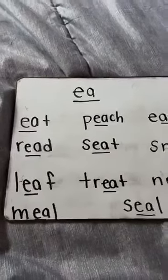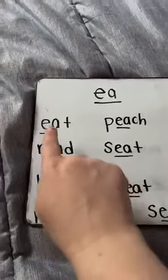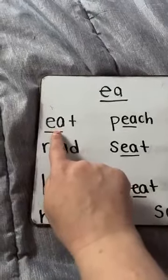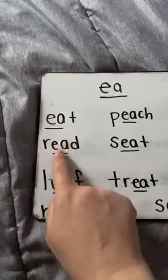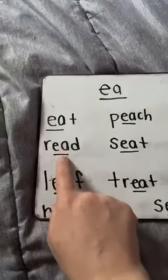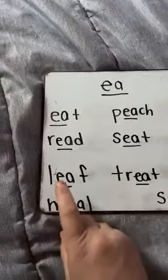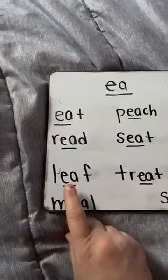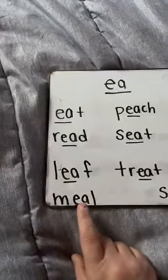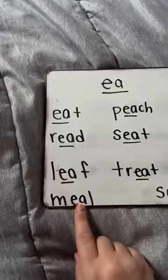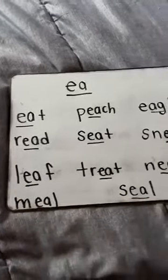Okay friends, you tell me the sounds and then you tell me the word. Here we go. Sound: E. Word: eat. Sound: E. Word: read. Yes, read. Sound: E. Word: leaf. Sound: E. Word: meal.